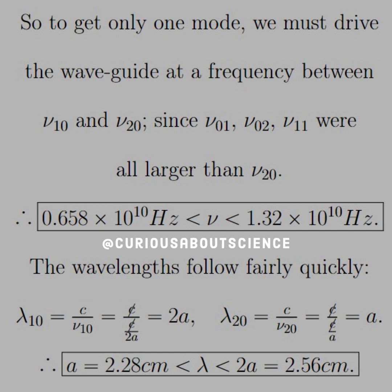The wavelengths follow fairly quickly. Just λ₁₀, just plug it all in, let them cancel. You get 2a, and 2,0 you get a. So we see that λ is between a and 2a, so 2.28 centimeters and 2.56 centimeters. I don't think that's right. I think I mistyped that one. You see we get something pretty hefty. I definitely mistyped that. It should be 4.56. Not too bad. Good reasoning. Always check your modes and apparently your typos.